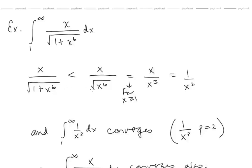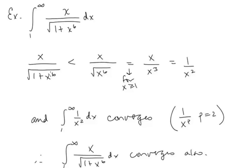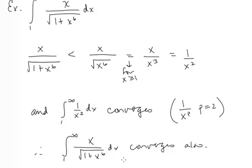The denominator in our original function is bigger because of the addition of the 1. If the denominator is bigger, the entire fraction is smaller. So our original function is strictly less than 1/x². We know that the integral of 1/x² from 1 to infinity converges, and our function is smaller than 1/x² on that interval, so our integral must also converge.